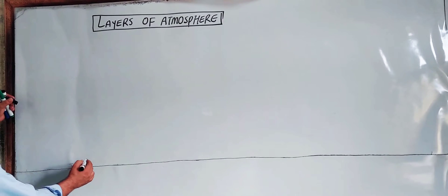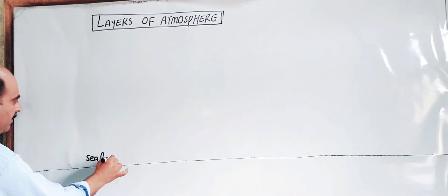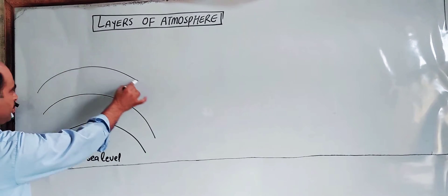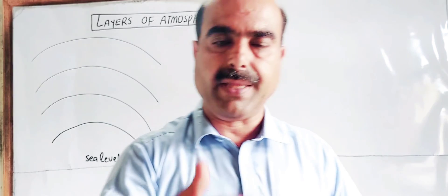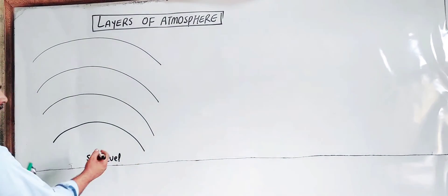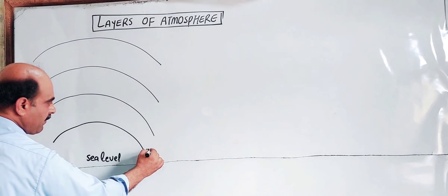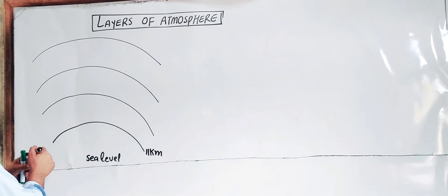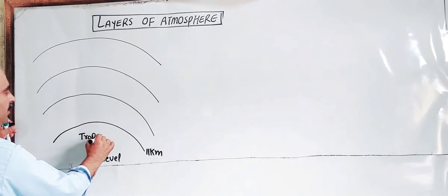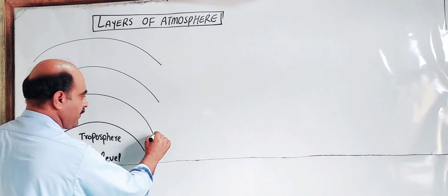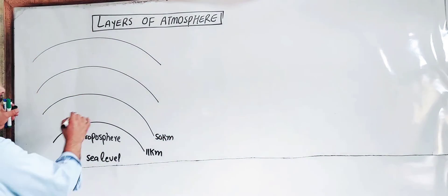There are four main layers. Starting from sea level, the first layer is the Troposphere, which ranges from 0 to 11 kilometers. The next layer, up to 50 kilometers, is the Stratosphere.